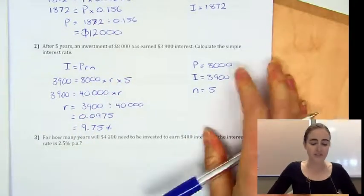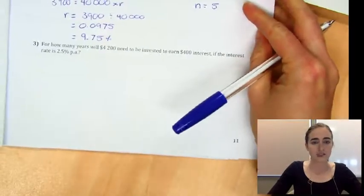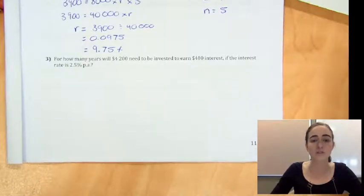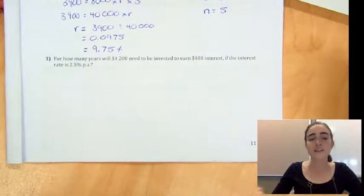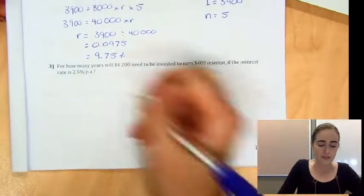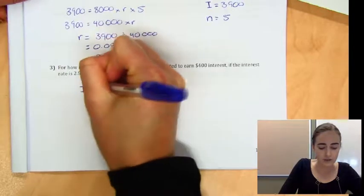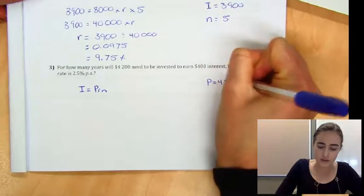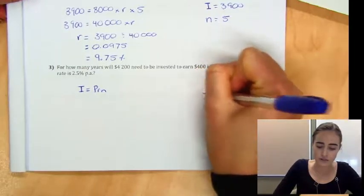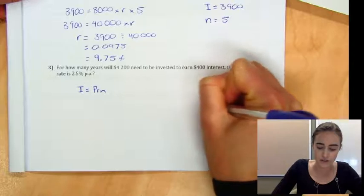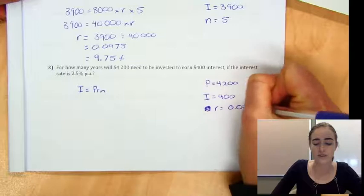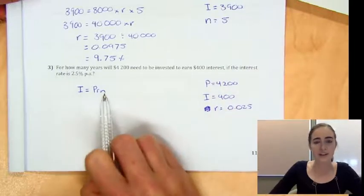All right, our last question. For how many years will $4,200 need to be invested to earn $400 interest if the interest rate is 2.5% per annum? So this time we're finding the number of time periods. So we'll write our formula, I equals PRN. We've got our principal of $4,200, our interest of $400, and our interest rate of 2.5%, so that's 0.025. And we're trying to find that N.